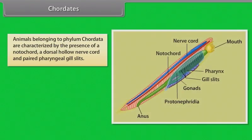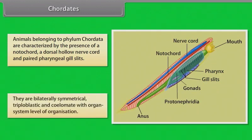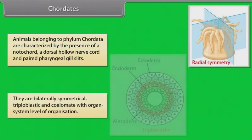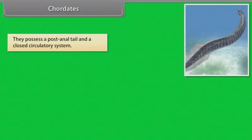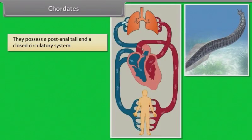Chordates. Animals belonging to phylum Chordata are characterized by the presence of notochord, a dorsal hollow nerve cord and paired pharyngeal gill slits. They are bilaterally symmetrical, triploblastic and coelomate with organ system level of organization. They possess a post-anal tail and a closed circulatory system.